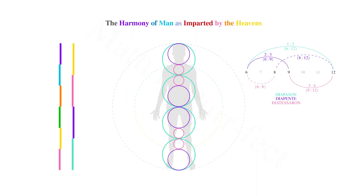Note how the diatessaron intervals in pink lie outside of the central circle within the radius of the middle. If we take the circle bisecting this difference in these two radii, it perfectly encompasses two octaves known as the dis-diapeson interval, of which three overlapping in vesica piscis formation traverse the height of man.